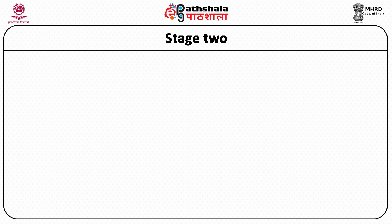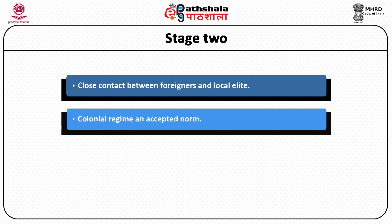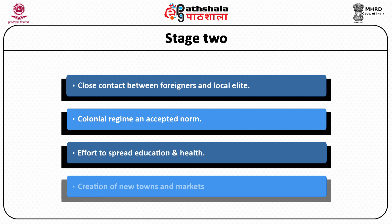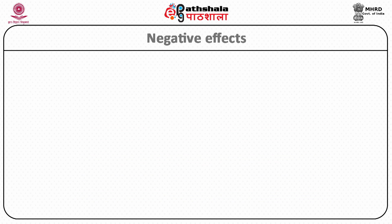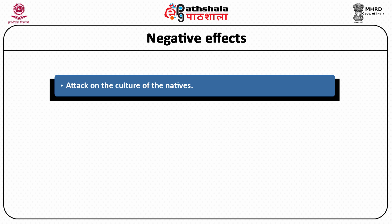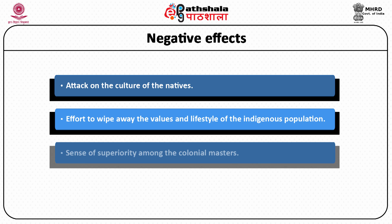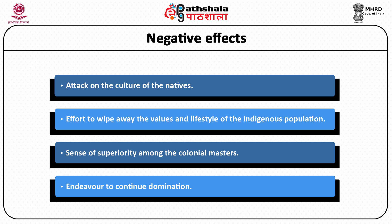In stage two, there was a close contact between the local elite and their foreign counterparts. They both worked together to reap profits. The effort of the colonial master was to spread health and educational facilities, but the sense of superiority continued — it was always there. The negative effects were that the colonial masters struck at the root of our traditions and cultures, trying to wipe away whatever good was there in our societies.